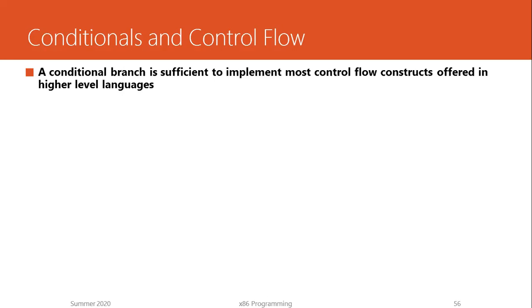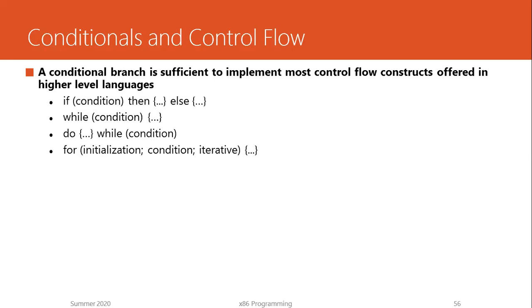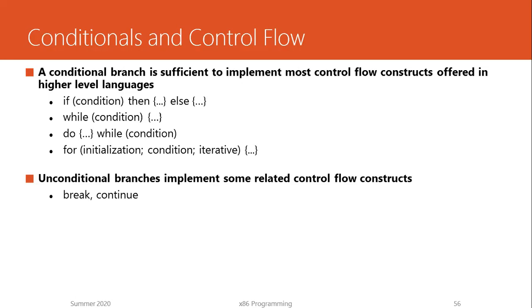Control flow is the order in which instructions are executed by the processor. Programs written in a high-level language implement complex logic like if-else constructs, do-while, while-do, and for loops — all ways to control the order of execution. Conditional branches, based on certain conditions evaluating to true or false, are sufficient to implement most of these control flow constructs.